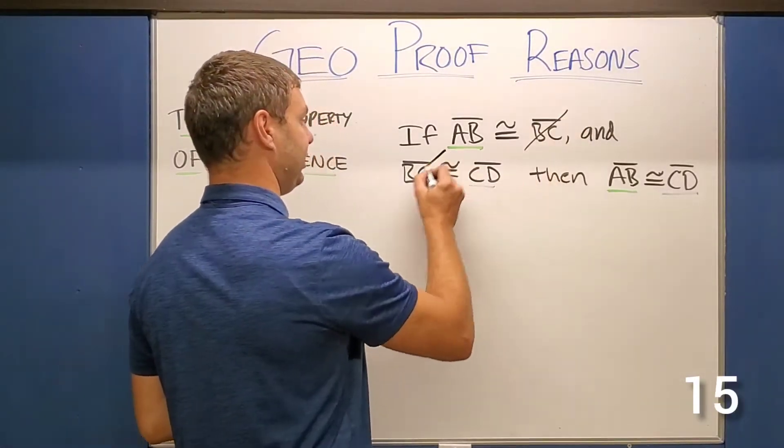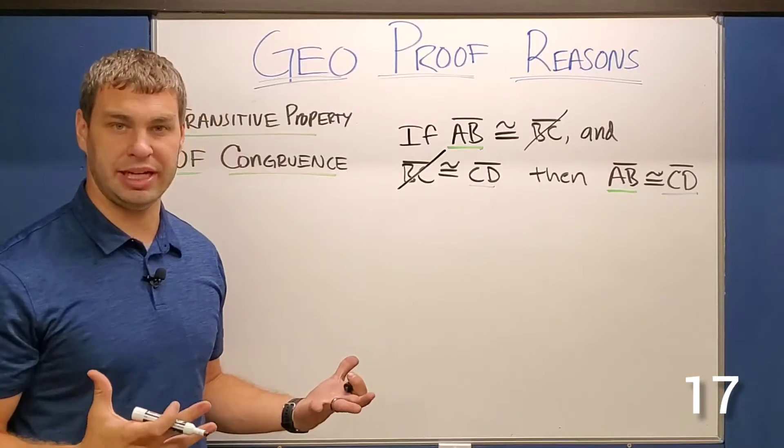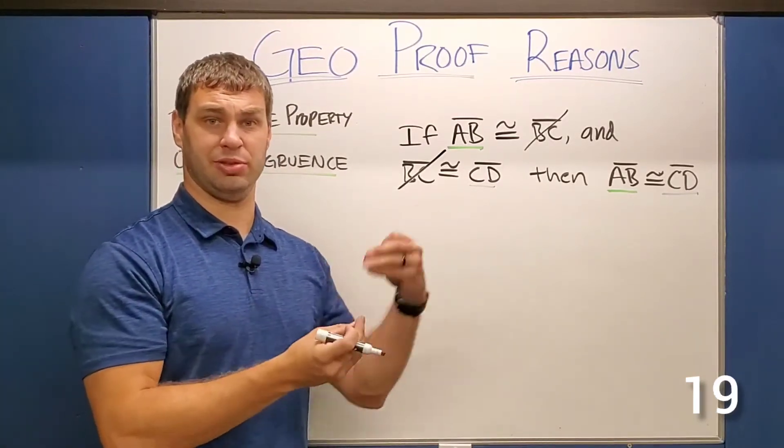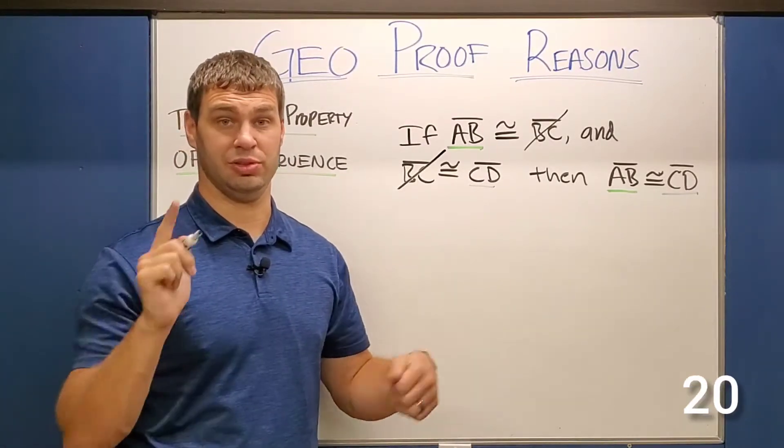So it's almost like we cross out that second one. It's kind of like a middle man. If it's congruent to the middle, the middle congruent to the last, the first is congruent to the last.